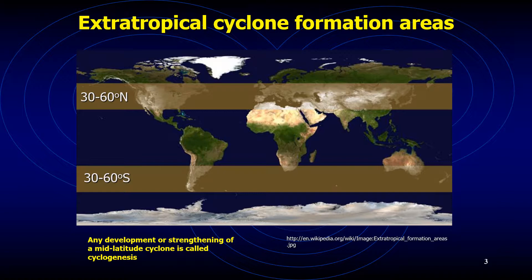the air on the downward or leeward side tends to curve cyclonically. This curving of air adds to the developing or strengthening of a cyclonic storm. Such storms that form on the leeward side of a mountain are called lee-side lows, and their development is called lee cyclogenesis.